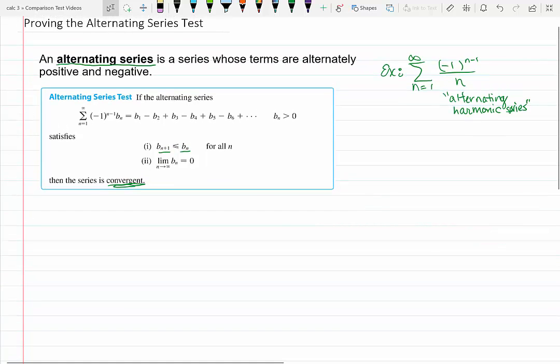So remember that when we talk about whether or not a series is convergent, a series converges if its sequence of partial sums converges. So what I'd like to do is alternately consider the odd and even partial sums.